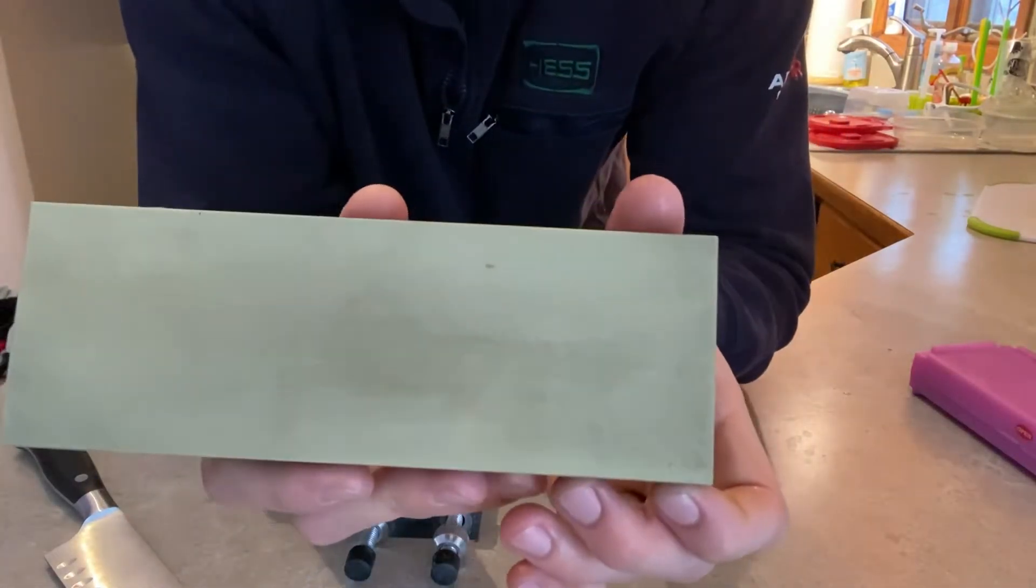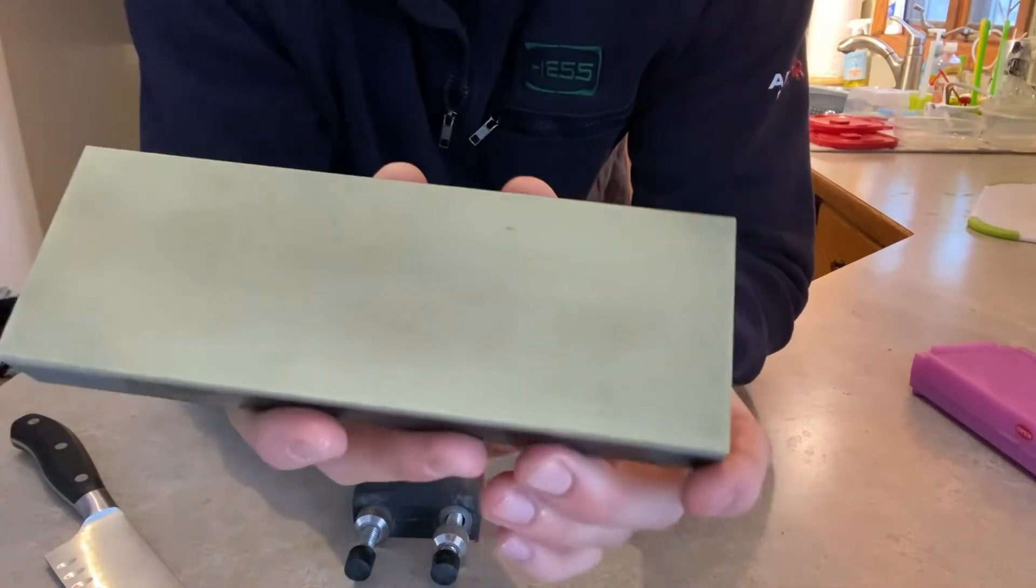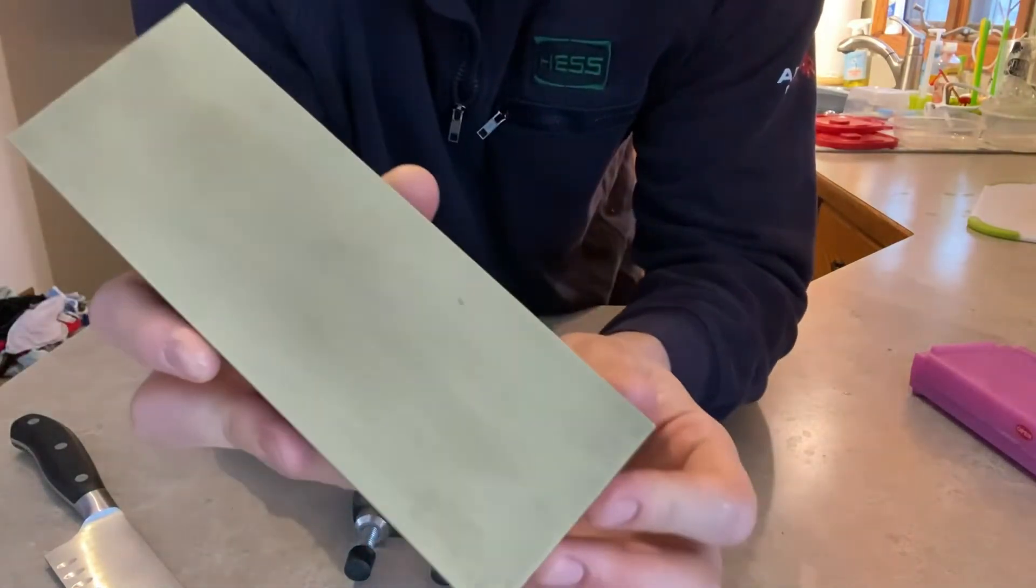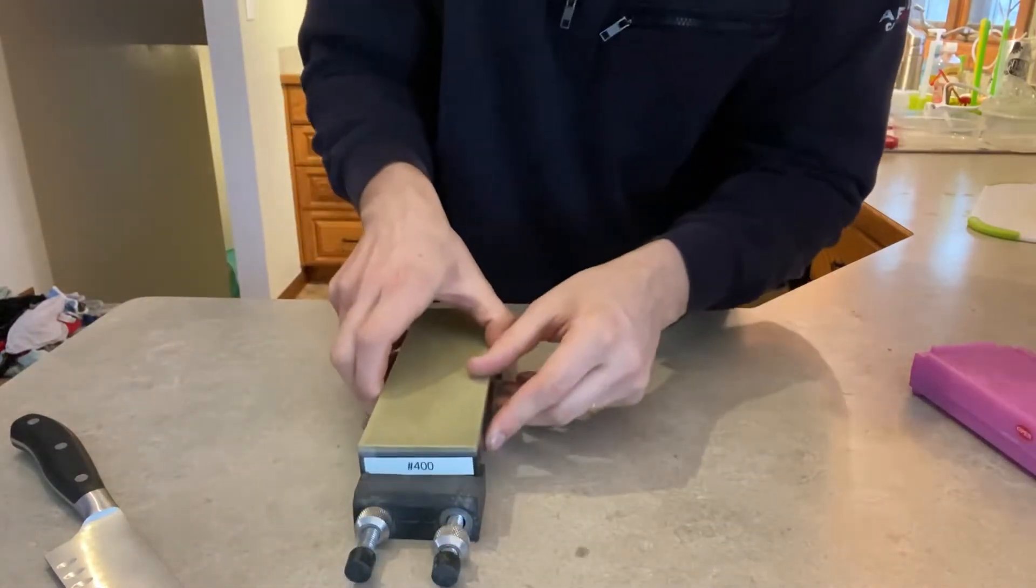And this stone is getting a little bit dark after about 50 sharpenings. There's getting to be a tiny bit, but from that sharpening you can see it's not all glazed over.